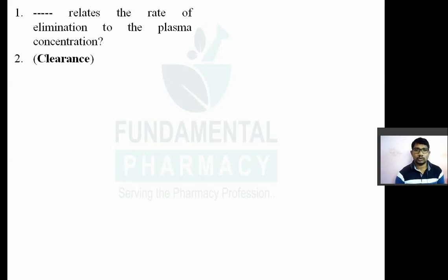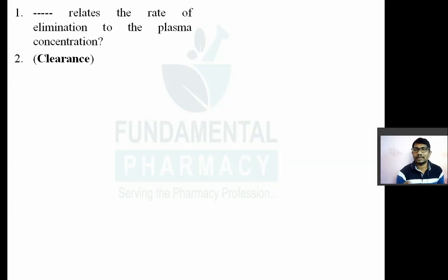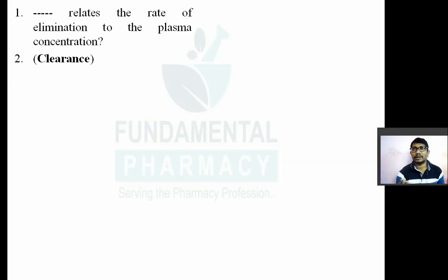If they ask renal clearance, it means the amount of drug being cleared by kidney per unit time. Biliary clearance refers to the amount of drug cleared per unit time by the gallbladder. Lung clearance is the amount of drug cleared per unit time by the lungs. Liver clearance is the amount of drug cleared by the liver per unit time. So clearance depends upon the organ of elimination.